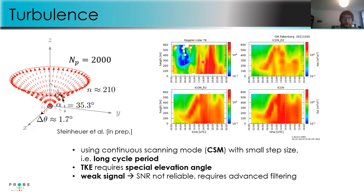Without corrections, just looking at radial wind variances, we underestimate total kinetic energy. When we account for the corrections — averaging along the line of sight — we get very good agreement with the sonic anemometer at 90 meters from the Falkenberg site near Lindenberg. A product has been assembled to directly compare Doppler-wind-retrieved kinetic energies with those from models — the ICON-D2, ICON-EU, and ICON models — and we can see discrepancies suggesting room for improvement in model parameterization.